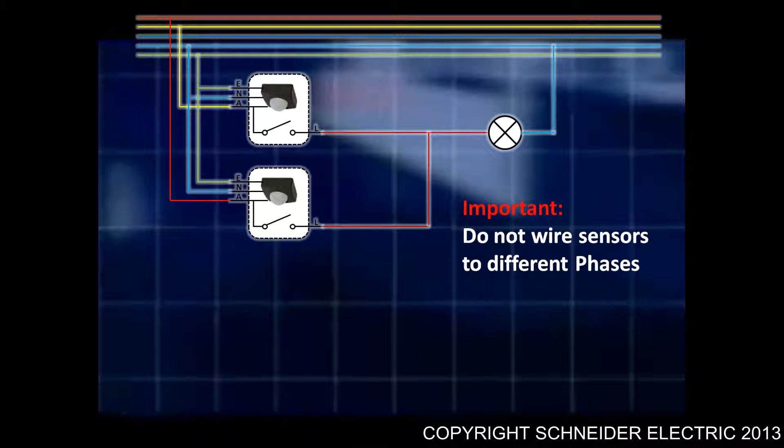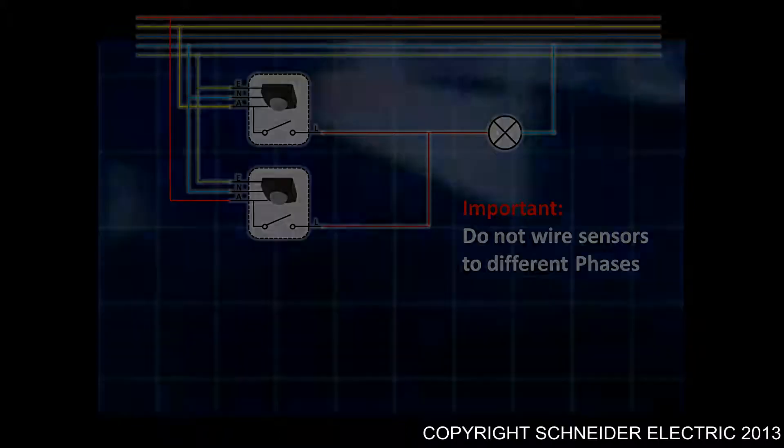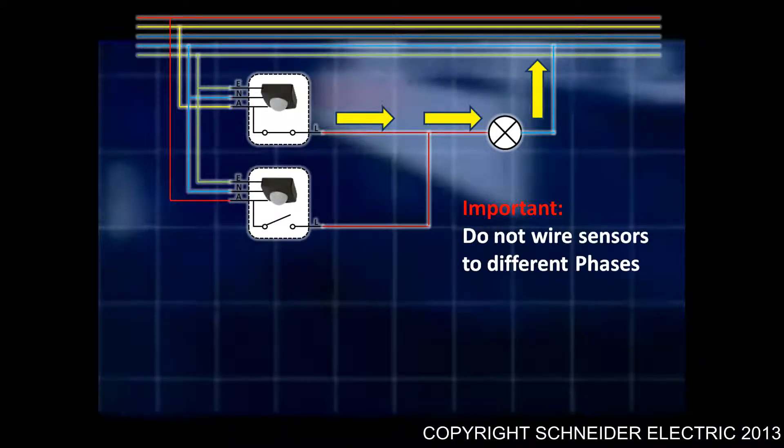What you'd expect to happen is that if one of those sensors detects movement, it will close its contacts and supply a load to the light, which then turns the light on. Now if both of those sensors are closed, so they both detect movement, what would happen is you'll get a direct short across two phases, and that would trip the circuit breaker, damage the units, and could potentially weld those contacts together.